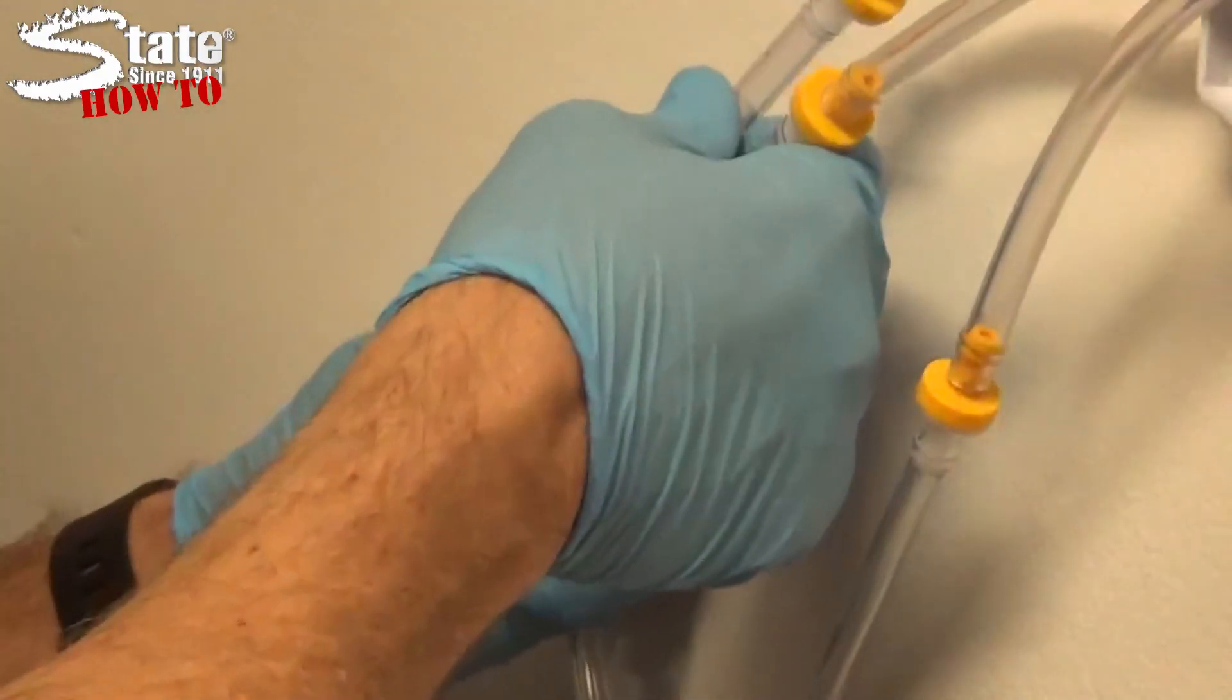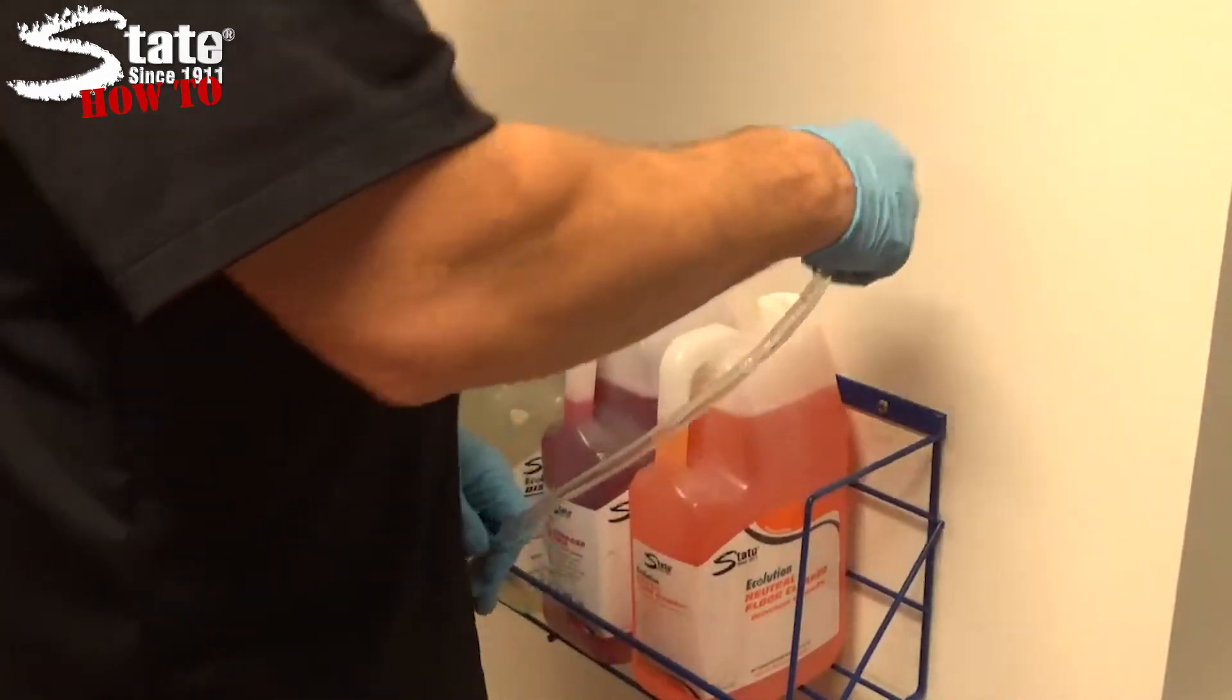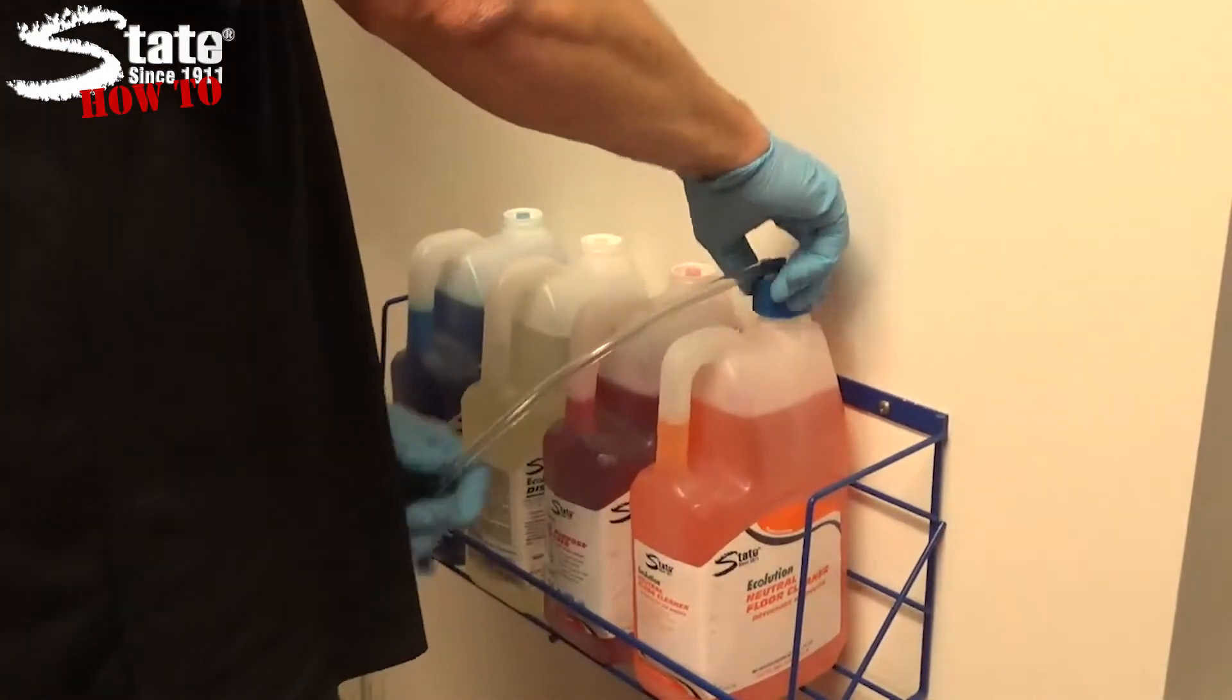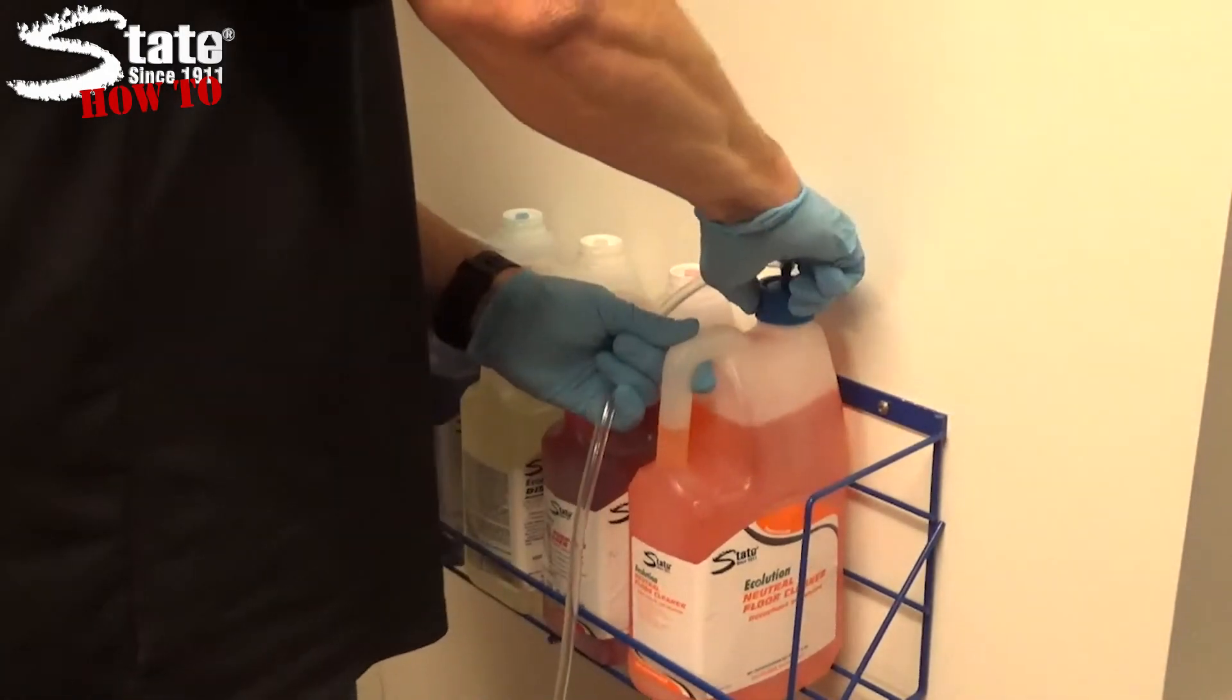Now, hook one end up to the check valve and the other end to the blue cap provided. Screw the blue cap onto the corresponding chemical. Repeat the step as necessary. Be sure to double check which solution goes to which tube.